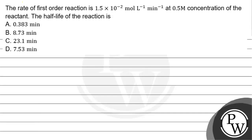Hello Bacho, let's read this question. The question says the rate of the first order reaction is 1.5 into 10 to the power minus 2 mol per liter per minute at 0.5 molar concentration of the reactant.